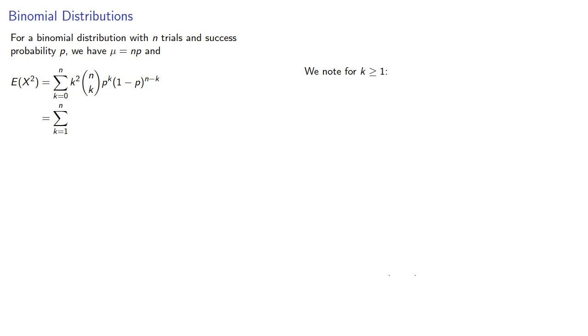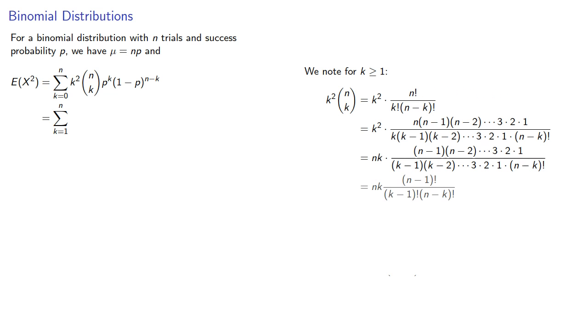And we note that for k greater than or equal to 1, k squared n choose k, well that will simplify. And note that many of our steps in this simplification are really the same as the steps we used to find the mean of the binomial distribution in the first place.